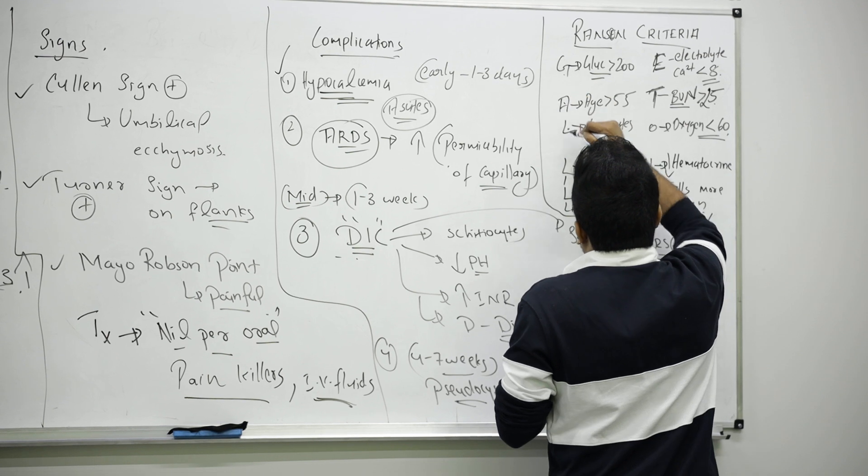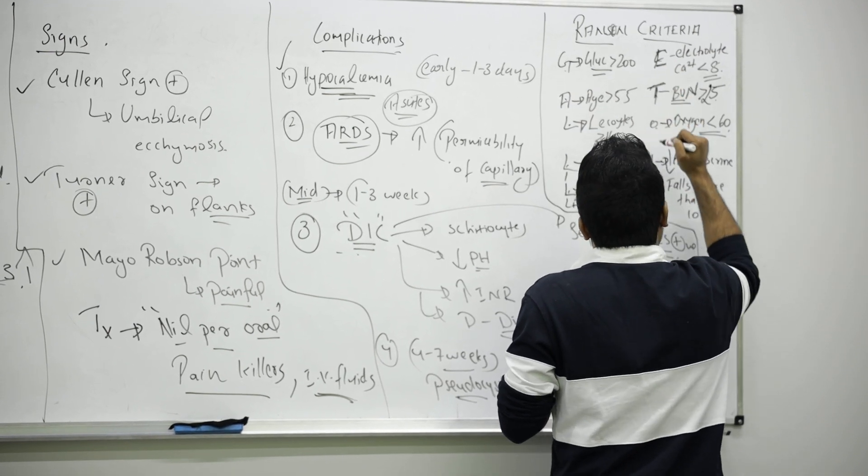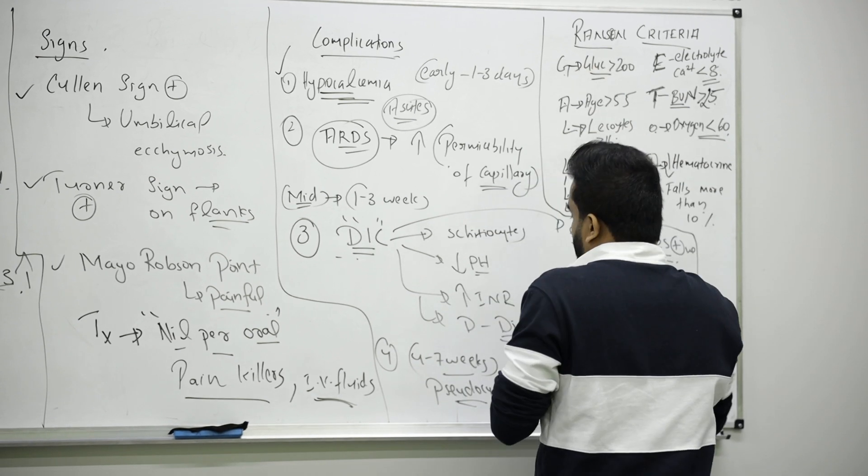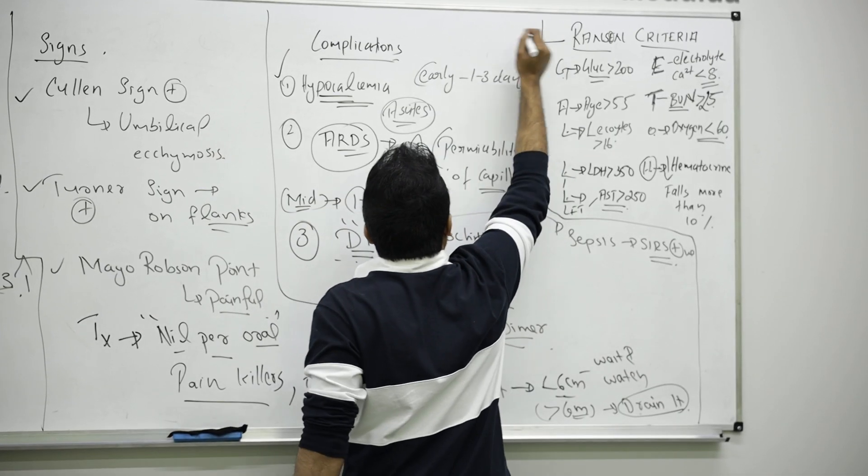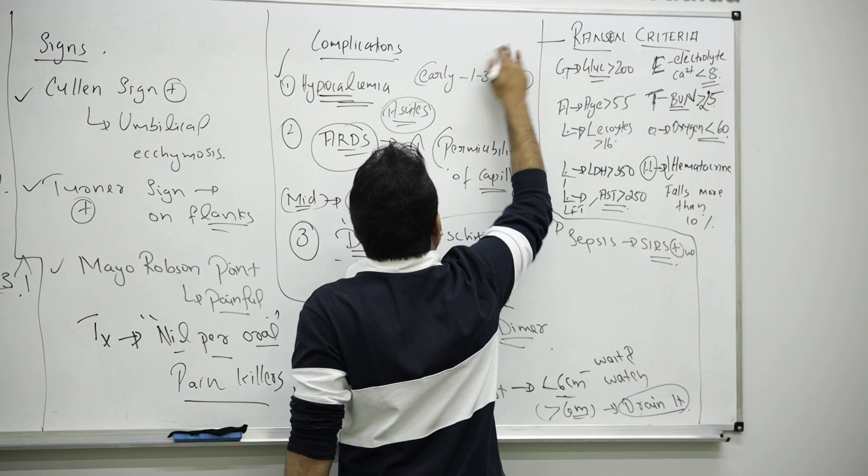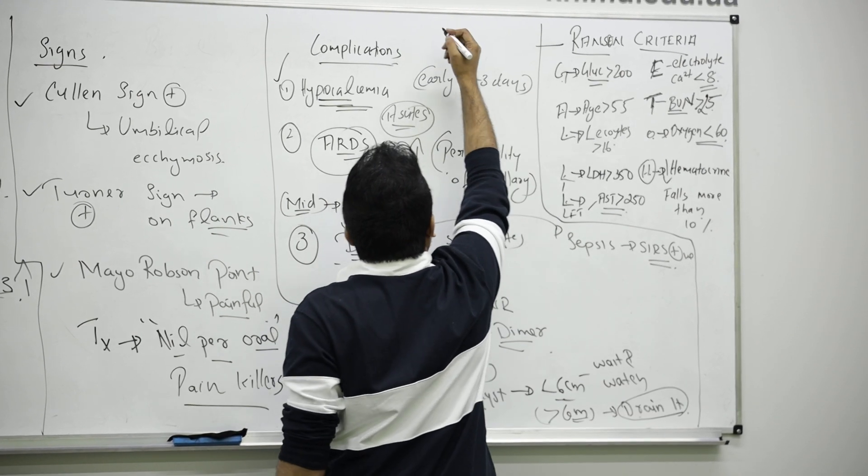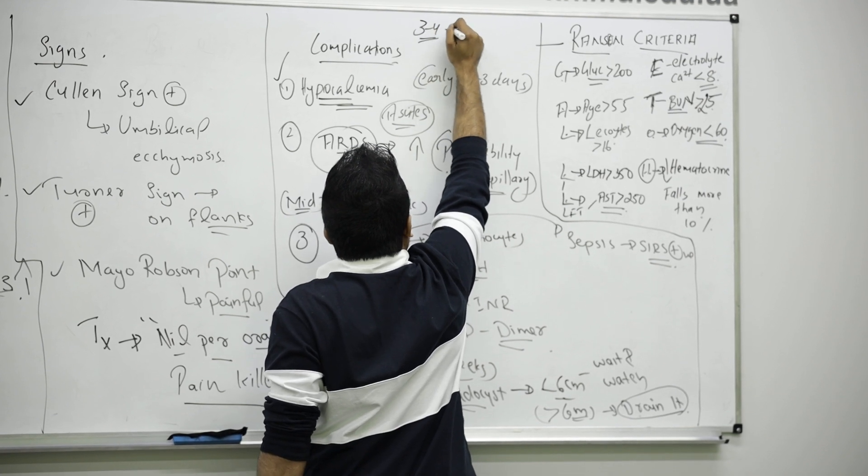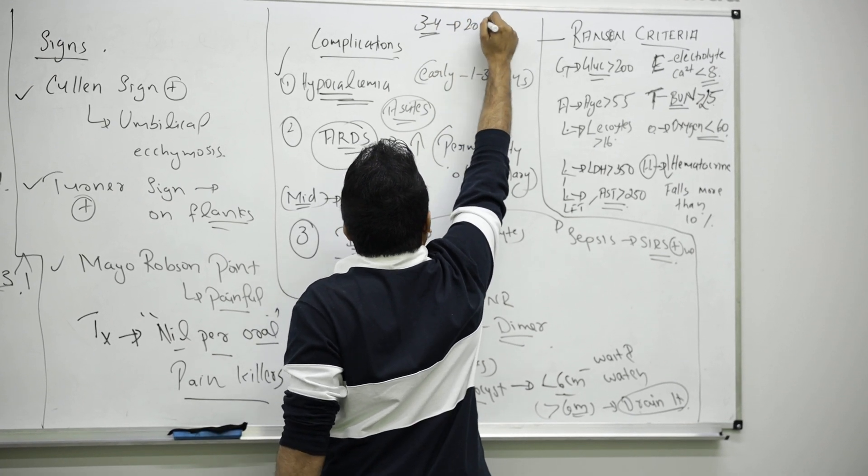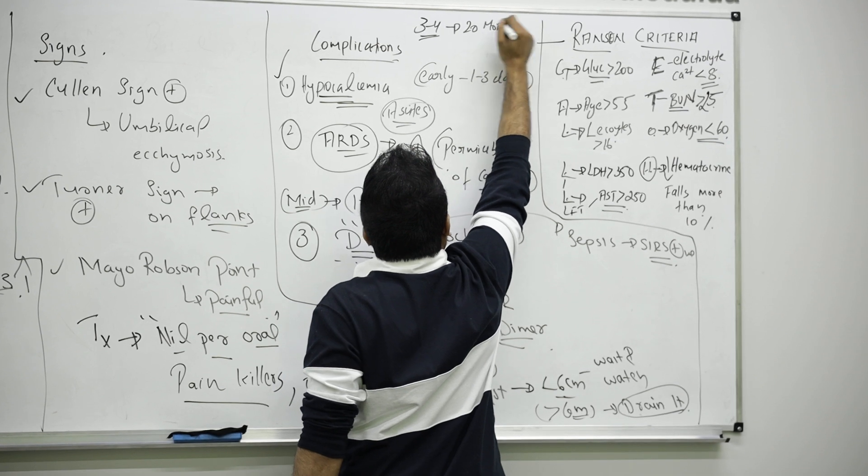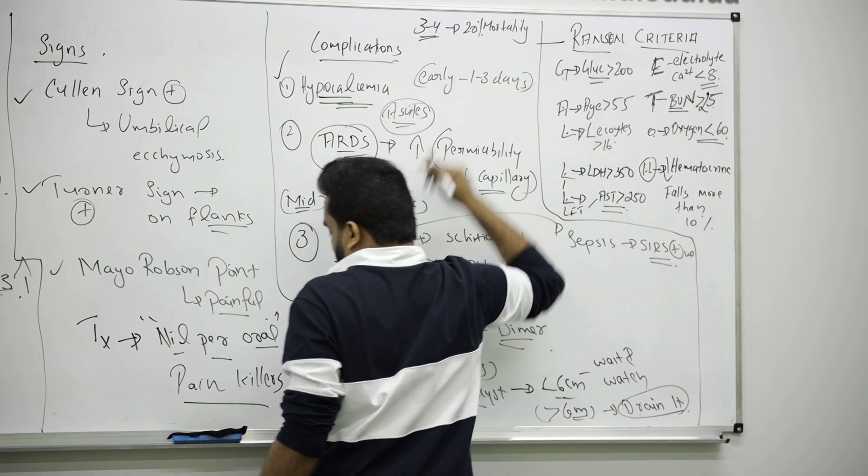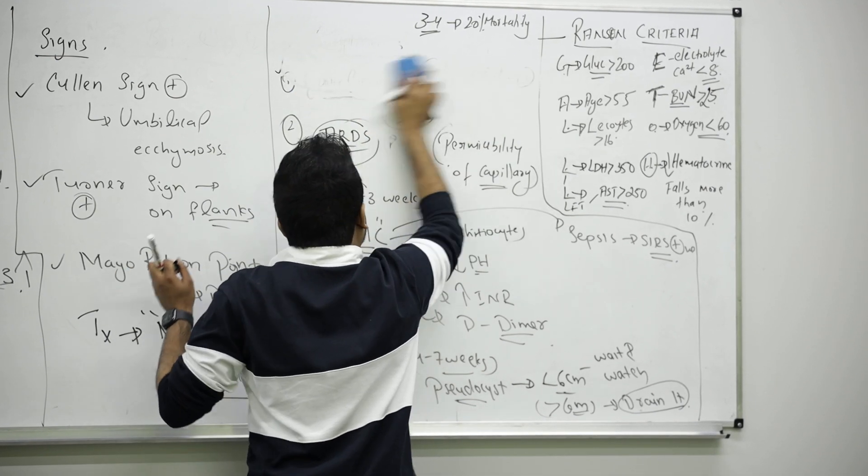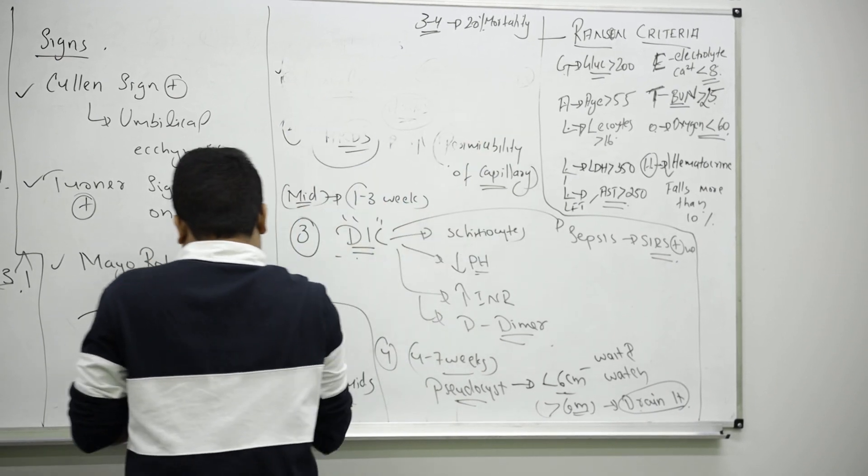So we will count each one and we give a point. If the point is between 3 to 4, it means the patient have 20% mortality rate.